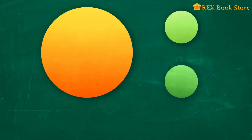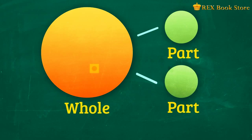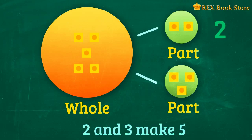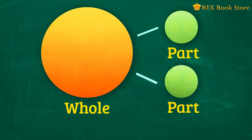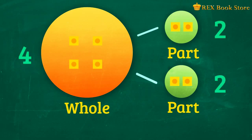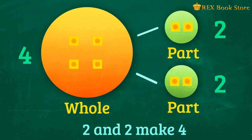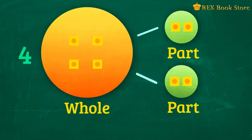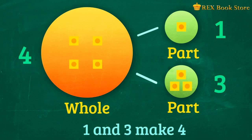A number bond shows the relationship between what we call the parts and the whole. For this example, we can say that 2 and 3 make 5. Let us make number bonds for 4. We say that 2 and 2 make 4. But that's not the only number bond we can make — we can also have 1 and 3. We say 1 and 3 make 4.